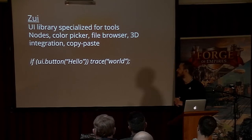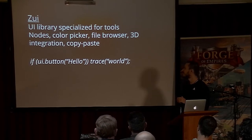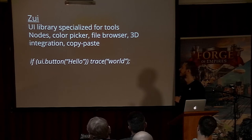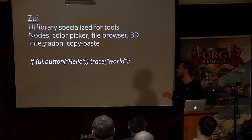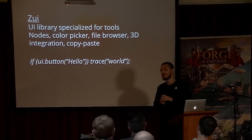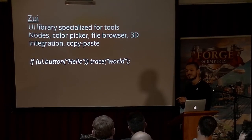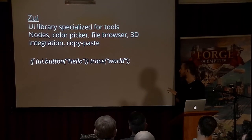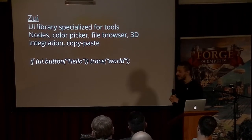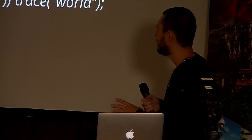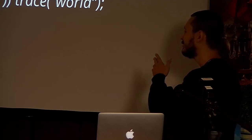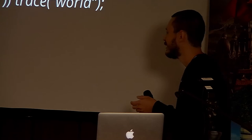I also needed a user interface library specialized for tooling, with things like node graphs, color pickers, and file browsers, plus easy 3D integration. It's an immediate mode user interface, so there's no retained state. If you want to show a button, you just call it; if you want to disable it, just comment out the line and it's gone.